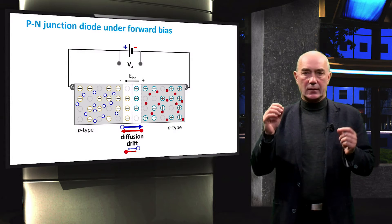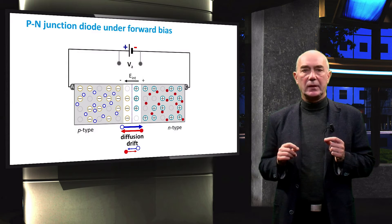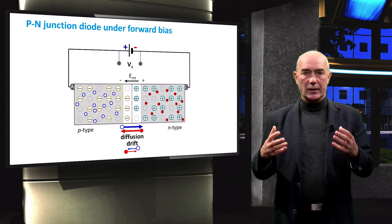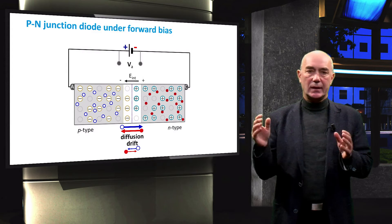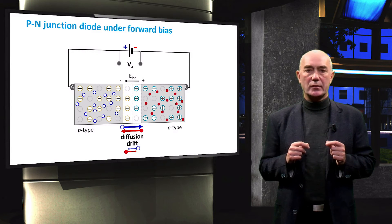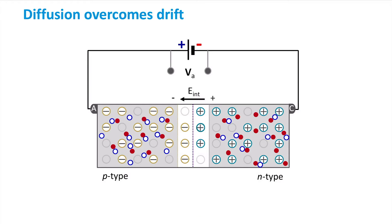This means that the internal electric field in the depletion region is weaker, and the drift currents of electrons and holes facilitated by the electric field cannot balance the diffusion currents anymore. When this happens, there will be a much larger concentration of minority carriers at the edges of the depletion region — electrons at the edge of the depletion region in the P-type region and holes at the edge of the depletion region in the N-type region — than at thermal equilibrium conditions.